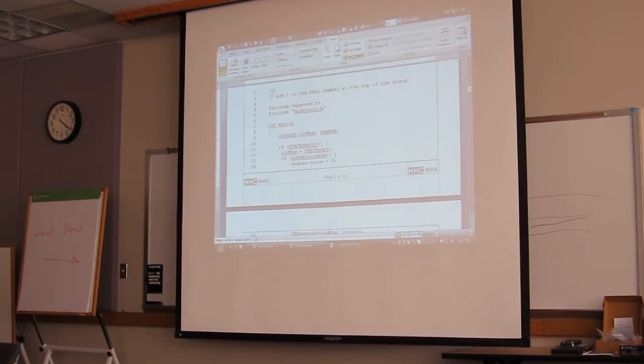Then in the main program, on line number nine there, I'm declaring the two variables for the addresses of objects that are in the Saturn memory. So these are objects that are in the emulated Saturn space called old num and new num. And I should say what this program is going to do is very simple. It will pop a real number off the stack, add one, and push the result back on. Just real simple stuff.